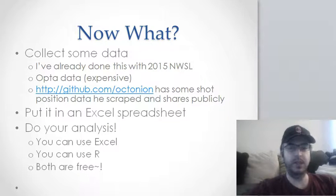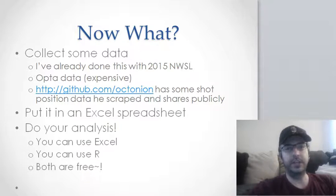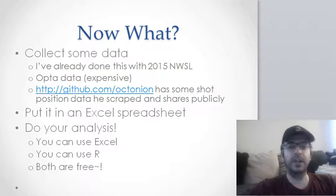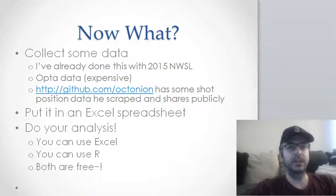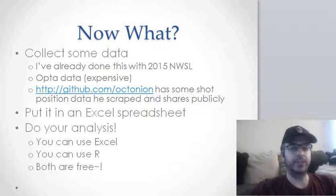Opta provides data, but it's fairly expensive. If you're trying to use the high-end data, you either need to get a job with a media company or be independently wealthy and buy the data. Another option is Christopher Long — OctOnion on Twitter — who has shot position data he scraped on his GitHub, shared publicly in CSV files. You can download and use them. It's some great public data that should be really helpful to people looking to build their own models.